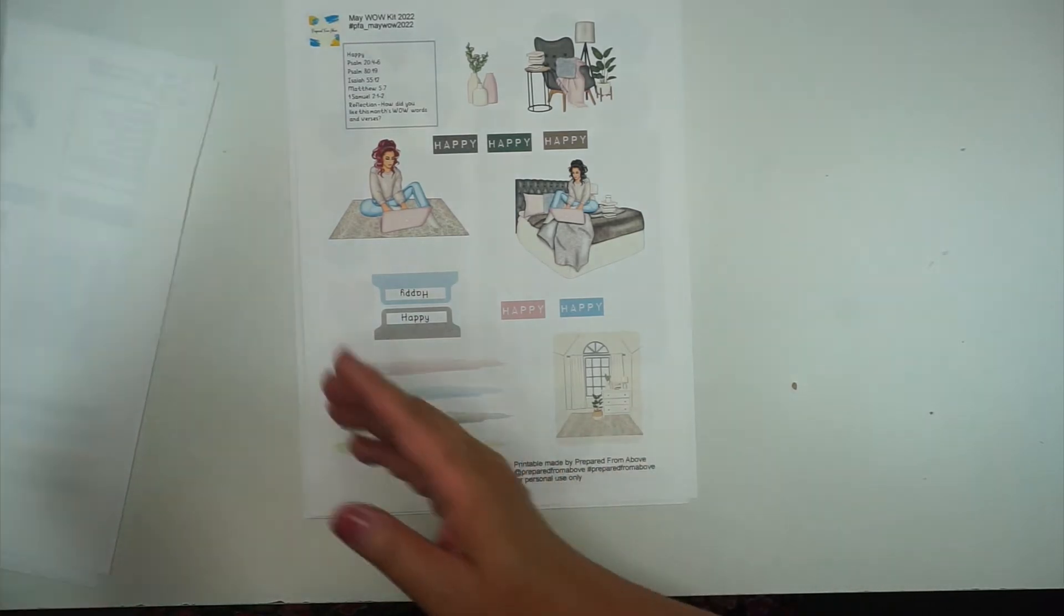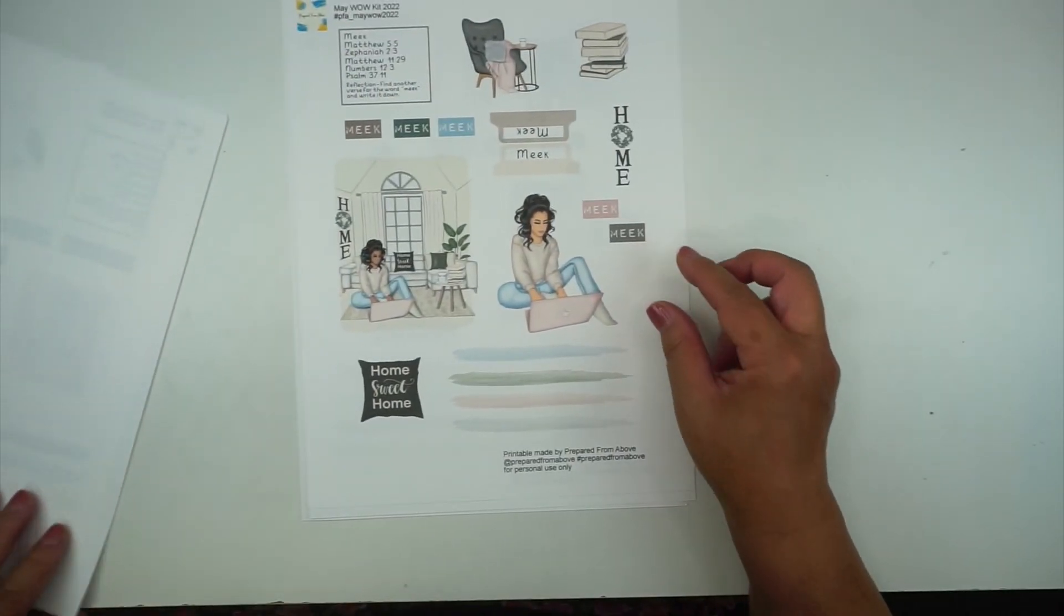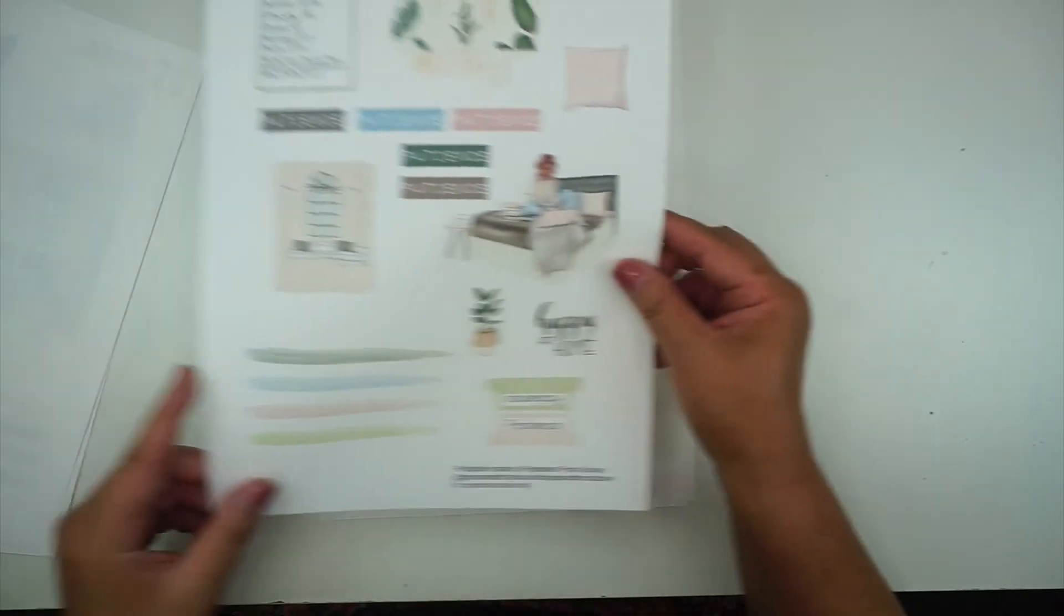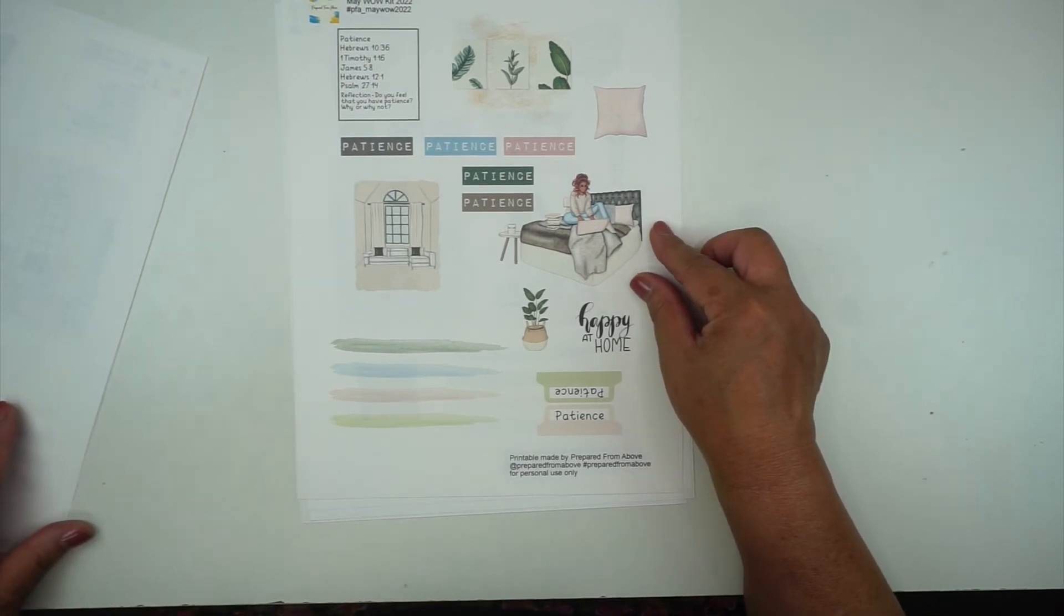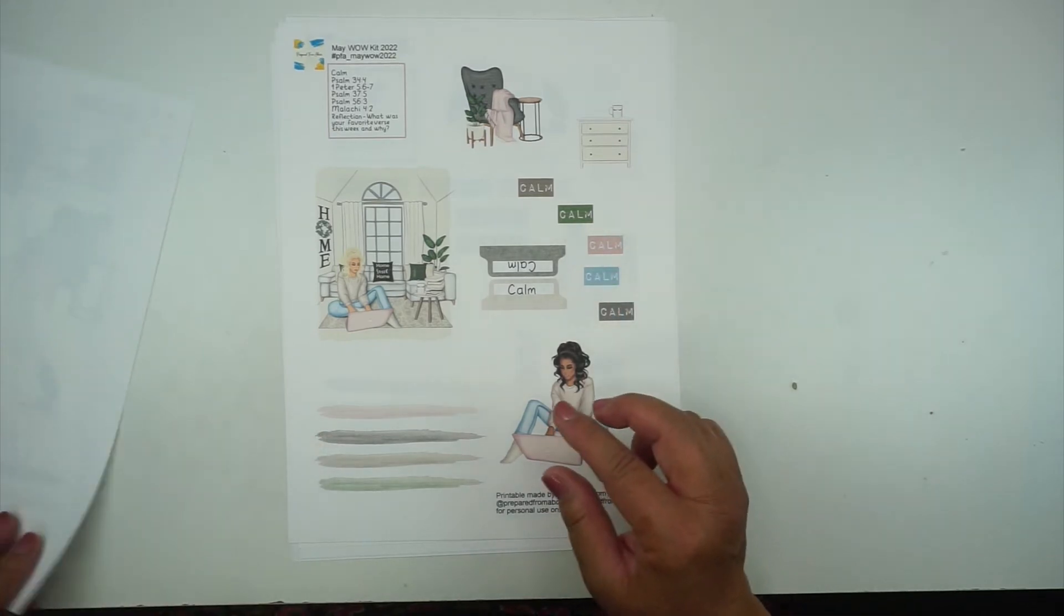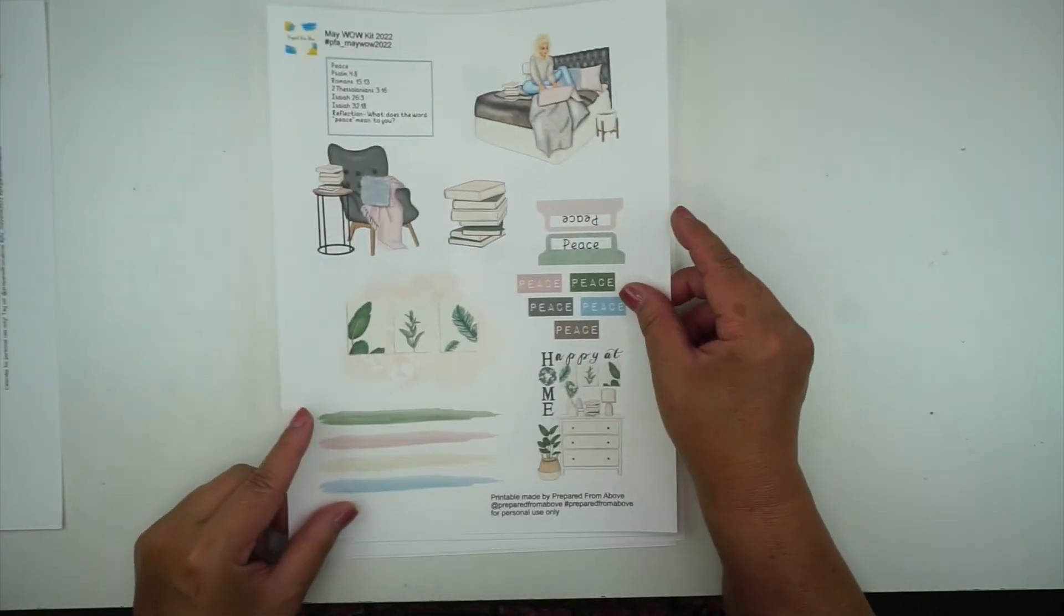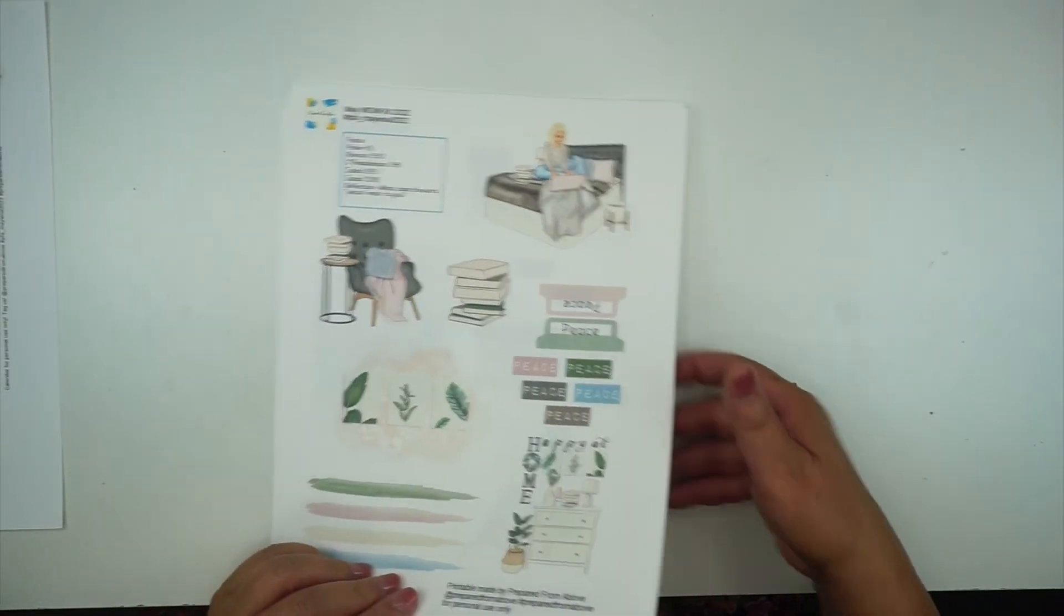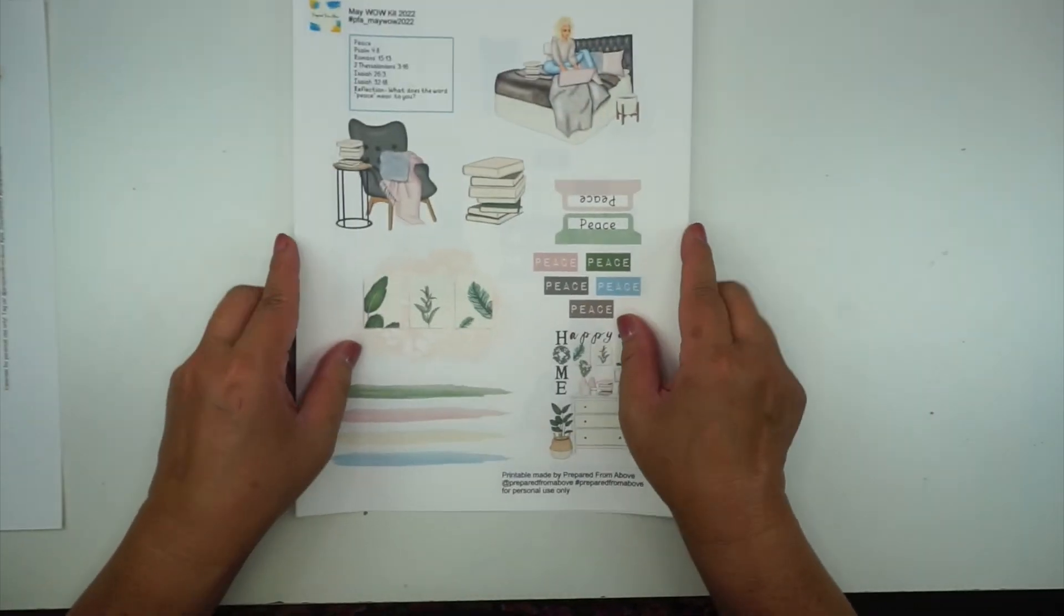It's just a bunch of little pieces that you can use on any of your pages. And then again, this is happy, this is meek, this is patience, and this is calm, and this is peace. So all of this is what you get in your kit.